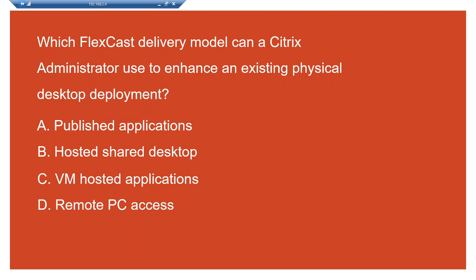The first option is Published Applications, the second one is Hosted Shared Desktop, the third one is VM Hosted Applications, and the last one is Remote PC Access. If you have created a machine catalog before, you would be able to answer this easily. I'll give you a few seconds to think about it and reveal the answer shortly.